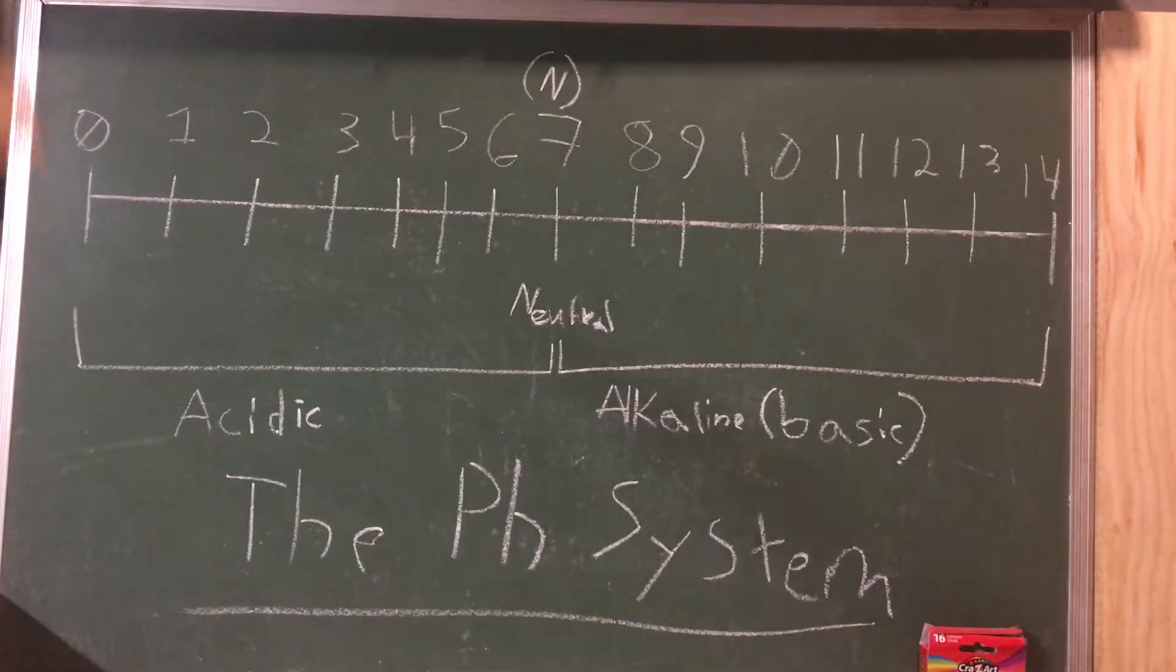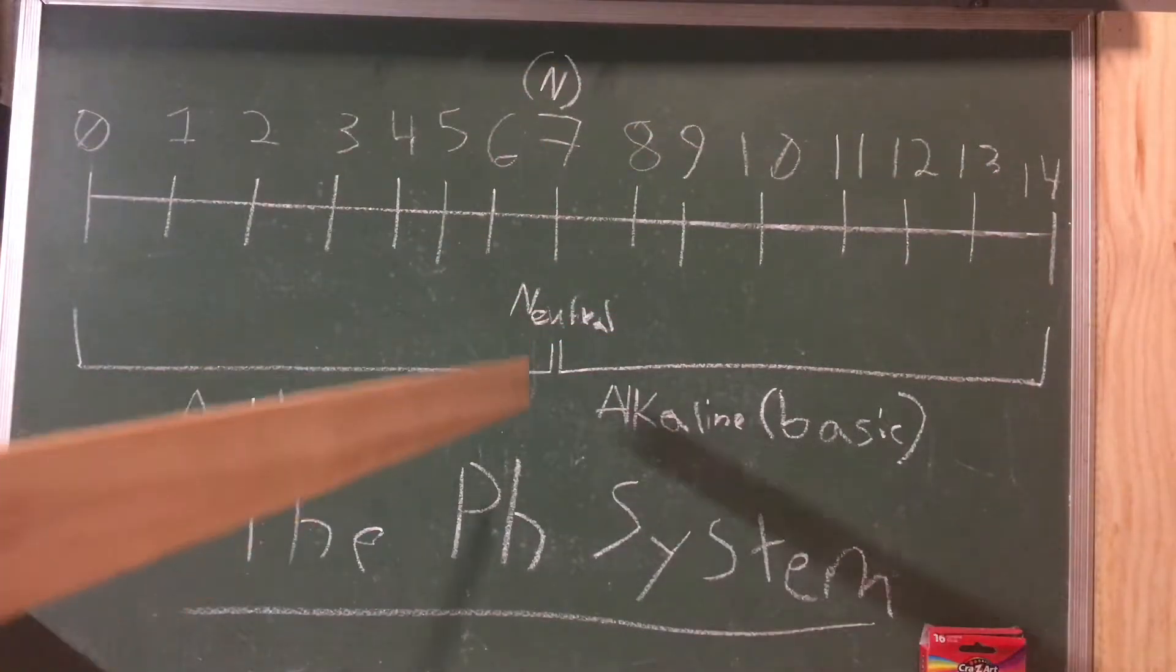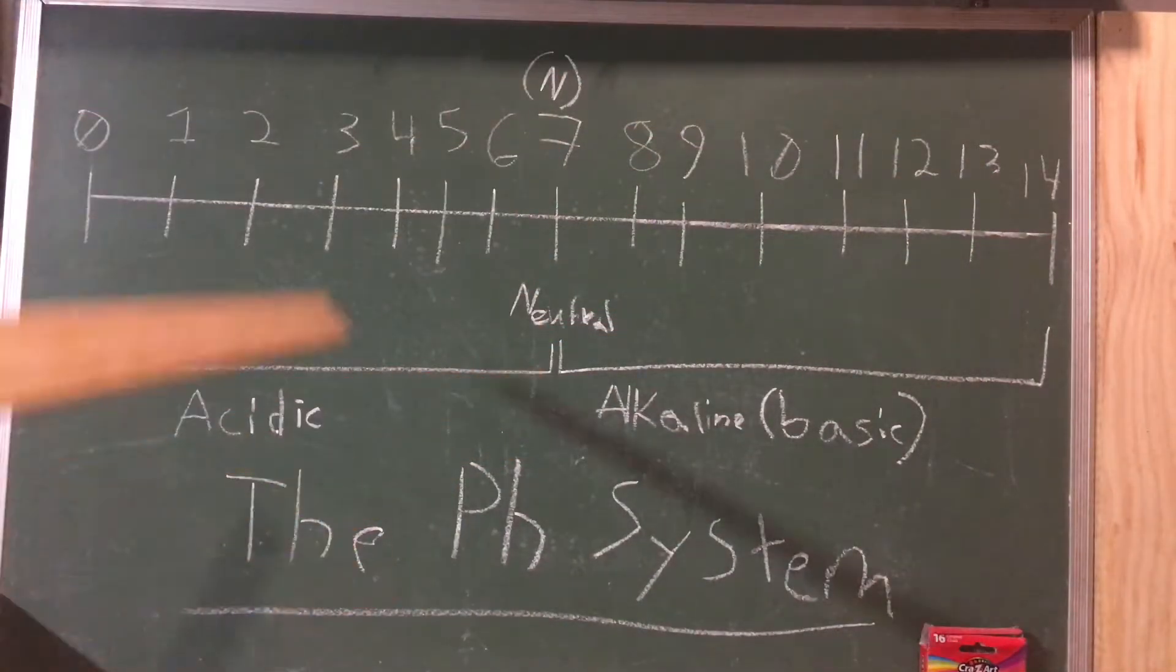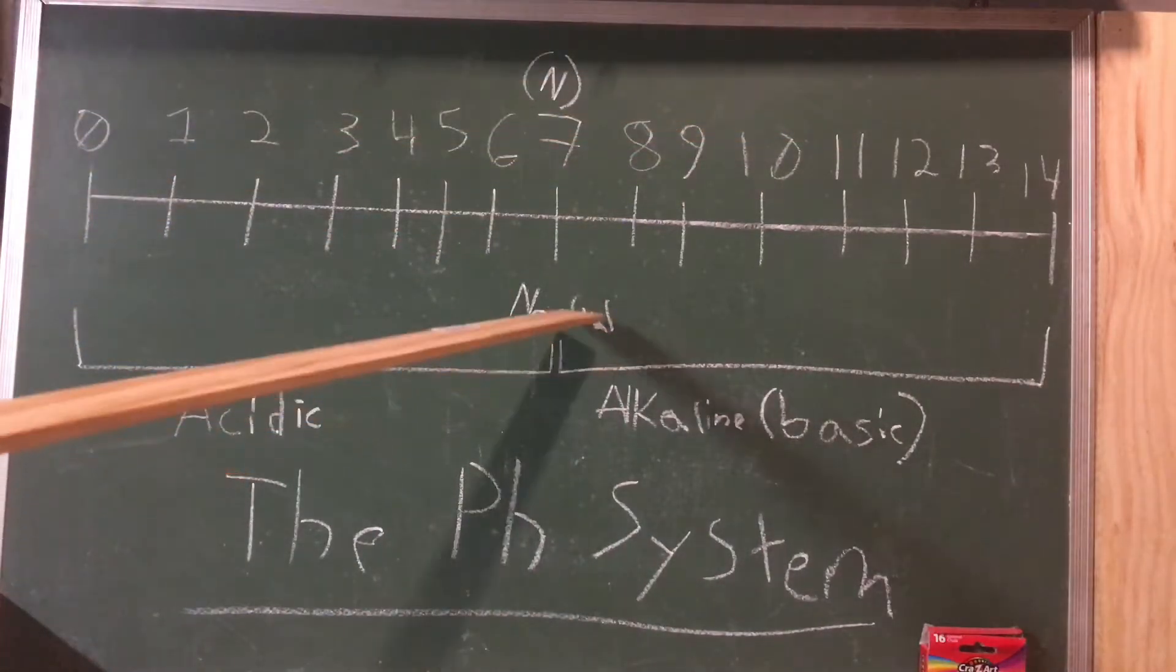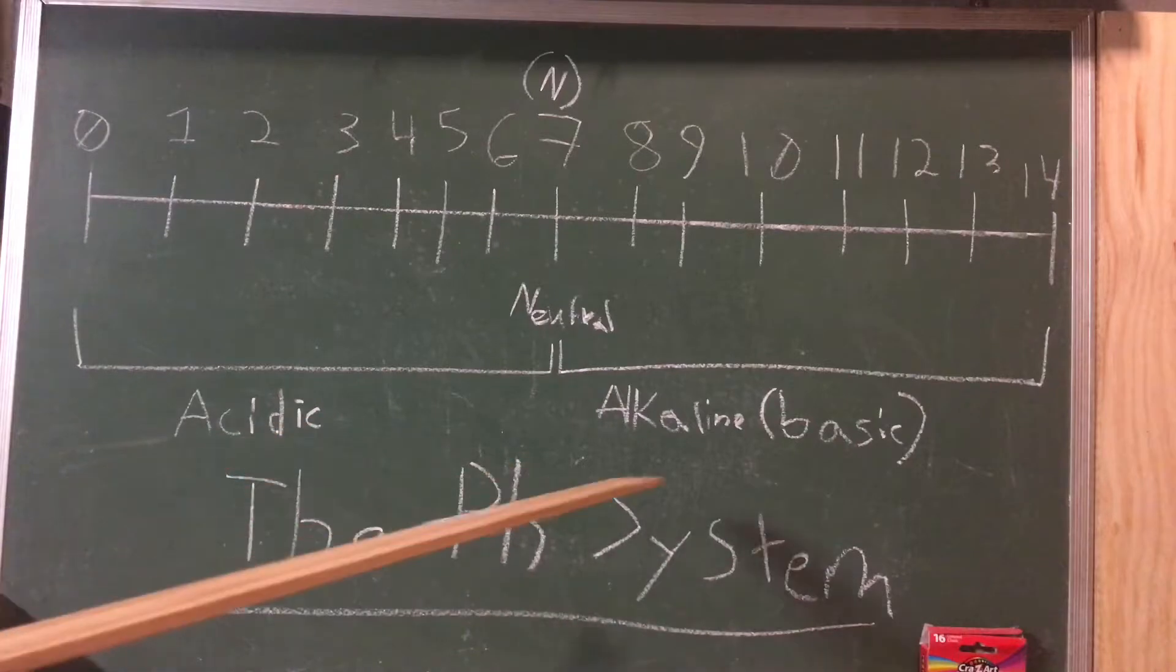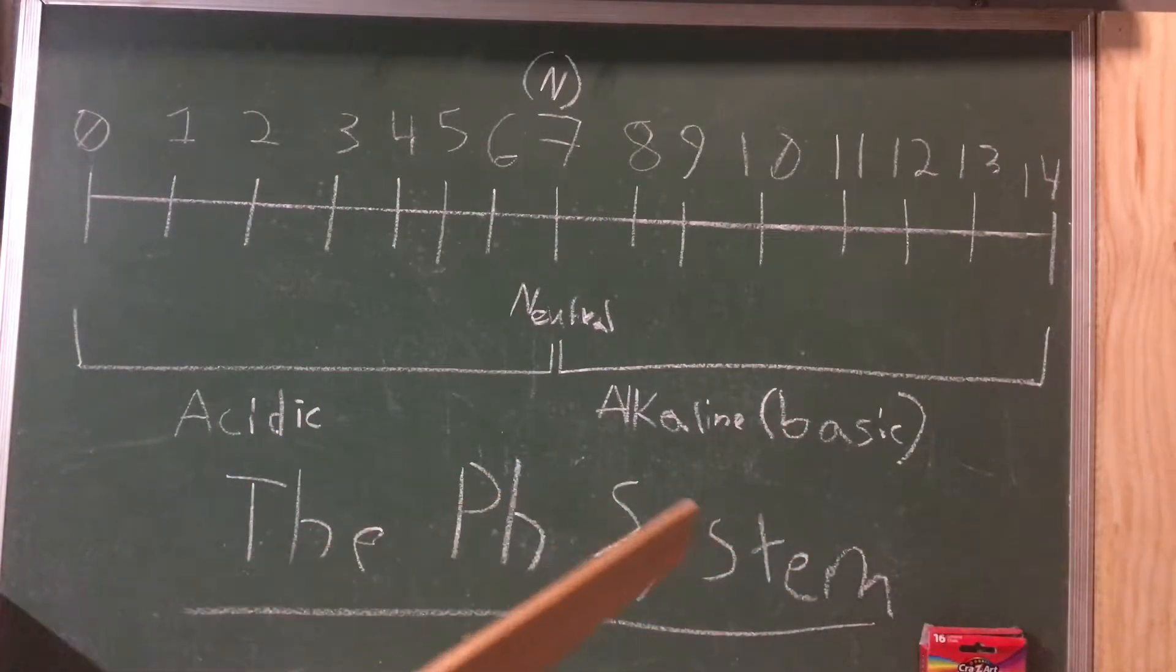So it's a system of measuring the properties of a chemical from 0 to 14. And basically you can divide the system into three parts: neutral, acidic, and alkaline, also known as basic.